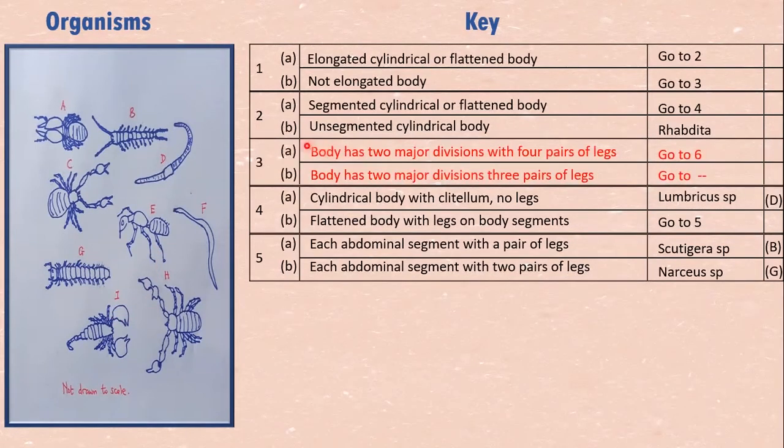And if we look at the not elongated bodies, A, C, E, H, I, look at A, it has three body divisions. This is one, this is two, this is three. We look at C, it has two body divisions. This is one and two. H has two body divisions. This is one and two. I has two body divisions. This is one and two.